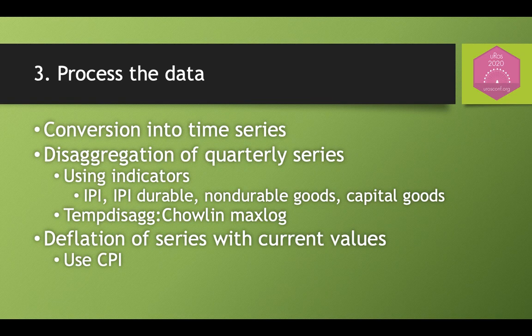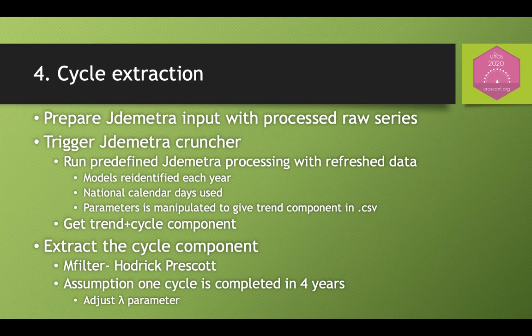Some indicators are in current values, so they are deflated using CPI. When all processing of the data is done, the script proceeds with creating a JDemetra input file, and then a predefined JDemetra workspace is triggered to run using the CRUNCHER. The output of this step is the aggregated trend and cycle component of the series.